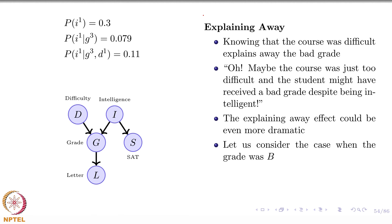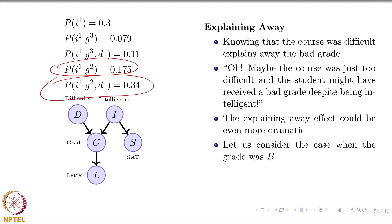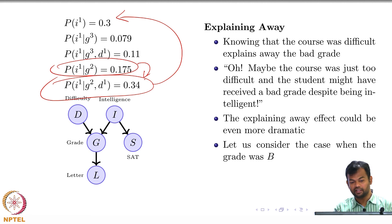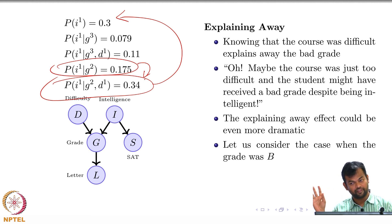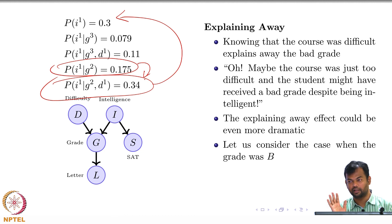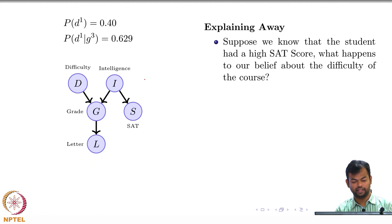Consider the case when the grade was B: compare P(I1 | G=B) with P(I1 | G=B, D=1). This is dramatic—there is almost a double increase in the estimate once you know the course was difficult, and now the estimate is actually better than the default prior probability. These are all different types of reasoning—causal, evidential, and explaining away—that you can do with a Bayesian network. Whether you factorize or not, all this reasoning can be done from the joint distribution. Having the factors improves computation and reduces the number of parameters, which are the two key benefits of factorization.